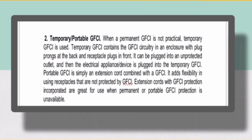Number two: Temporary or Portable GFCI. When a permanent GFCI is not practical, a temporary GFCI is used. Temporary GFCI contains the GFCI circuitry in an enclosure with plug prongs at the back and receptacle plugs in front. It can be plugged into an unprotected outlet and then the electrical appliance or device is plugged into the temporary GFCI. Portable GFCI is simply an extension cord combined with a GFCI. It adds flexibility in using receptacles that are not protected by GFCI. Extension cords with GFCI protection incorporated are great for use when permanent or portable GFCI protection is unavailable. To understand more about portable GFCI, watch this video.